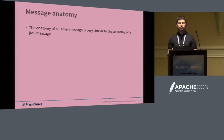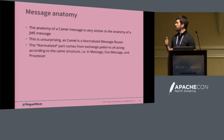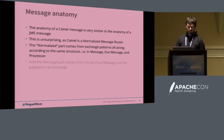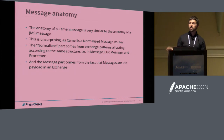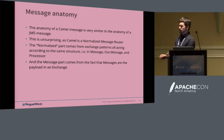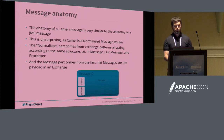Message anatomy: Camel is based around messages, very similar to the anatomy of a JMS message. It's a normalized message router — the normalized part is because the exchange patterns all operate with the same structure: an in-message, an out-message, and a processor. The message part is the fact that messages are the payload. Messages can be anything — Camel doesn't even have to understand the contents of a message. The processors might understand the contents, but fundamentally Camel doesn't care what's in the message — it's a payload. Here's what the message structure looks like: a message ID, headers, properties, and payload — very similar to JMS messages.